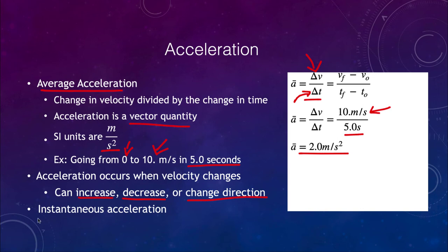We look again at instantaneous acceleration versus average acceleration. Instantaneous acceleration is how fast you are accelerating at any given moment, whereas average acceleration is the average over a period of time.